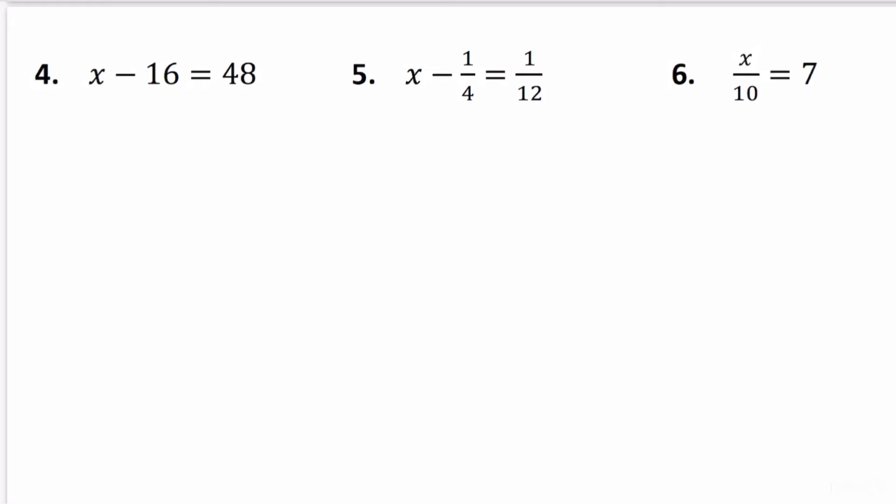Question number four, we're subtracting. So x minus 16 equals 48. The opposite of subtracting is to add. If I add 16 to both sides, I get x is equal to 64.